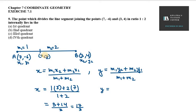For y: m1 is 1, y2 is 4, m2 is 2, y1 is -6, over m1 plus m2, which is 1 plus 2.